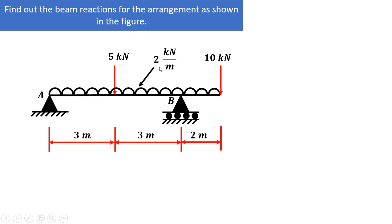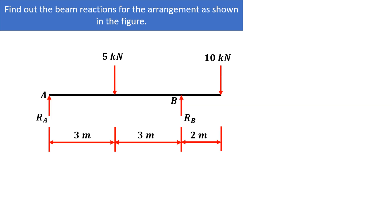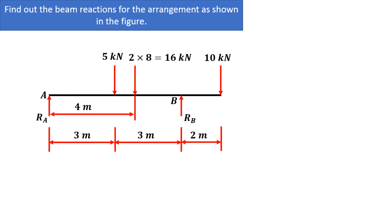First, we'll convert this uniformly distributed load of 2 kN per meter into a point load. The total distance on which this UDL is acting is 3 plus 3 plus 2, that is 8 meters. So 2 into 8 is 16 kN. For 1 meter the load is 2 kN, so for 8 meters it is 16 kN. As it is a uniformly distributed rectangular load, it acts at the center of the 8 meter length, that is at 4 meters from the left hand support.